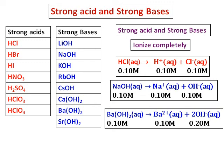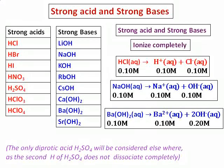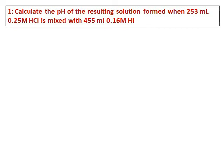This is true for bases with one OH — lithium, sodium, potassium, rubidium, and cesium hydroxides. But for calcium, barium, and strontium, one mole of barium hydroxide gives two moles of OH⁻, so the concentration of OH⁻ is two times the concentration of the base — for example, 2 × 0.10 = 0.20 M. For sulfuric acid, the diprotic case is handled differently and will be covered in a separate video.